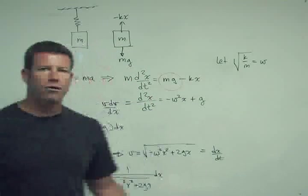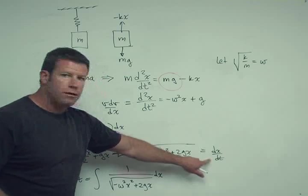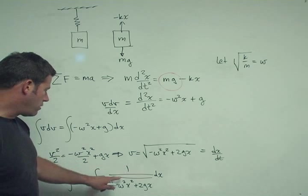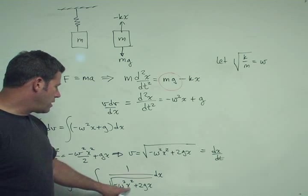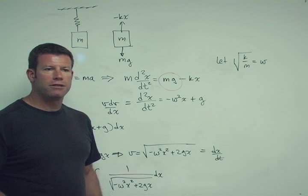So now, lo and behold, we end up with what we wanted. So when we separate variables here and then integrate, we get the integral of dt equals the integral of 1 over the square root of the quantity minus w squared x squared plus 2 gx. So we did, in fact, get this whole polynomial expression in the denominator.